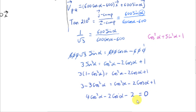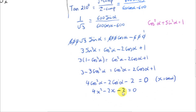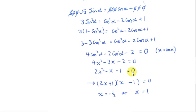We solve this quadratic equation for x and then, once we've found x, we can get alpha. Factorizing gives (2x + 1)(x − 1) = 0. Setting each factor to zero gives x equals minus one half or x equals 1. Since x is cos alpha, we have cos alpha equals minus one half or cos alpha equals 1.